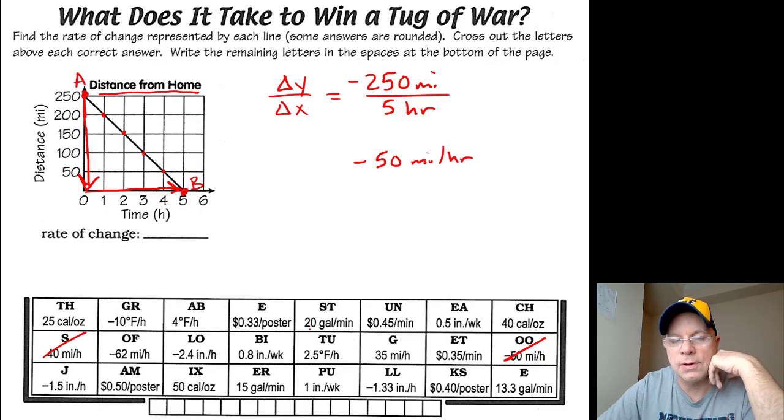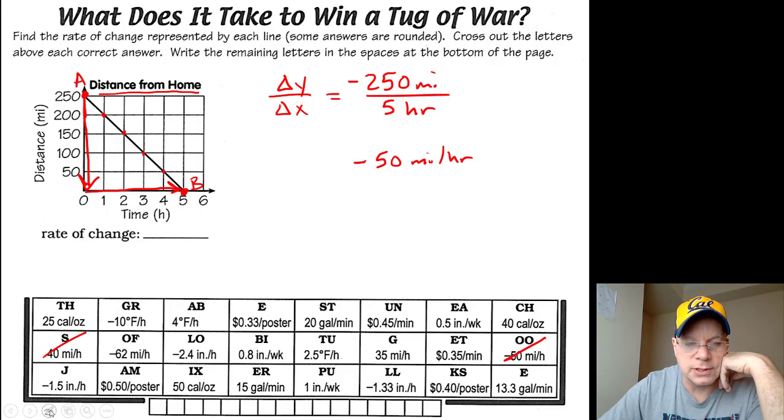So cross that out. Before we go to the next one, I just want to show you something. If I had chosen the same a, but if I chose this point as my b, if I'm going from a to b now...